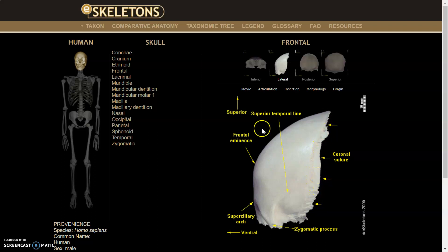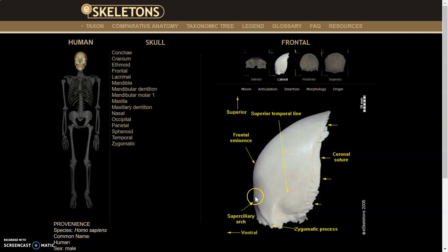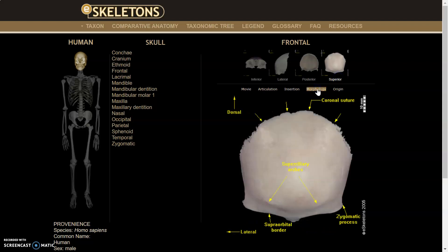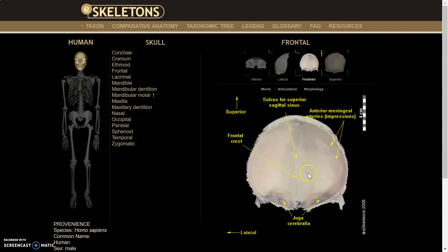Clicking on morphology, you get all the features. This is the coronal suture. You'll get the superior temporal line — this is where the temporal muscle inserts. The zygomatic process is where the zygomatic bone fits in. Back here would be the temporal, and then the frontal eminence, as well as the superciliary arch where basically the eyebrows would be. Looking at the superior view and clicking morphology again, you'll see the same kind of features.